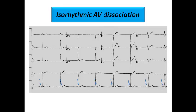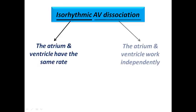On the fourth beat the P-wave is before the complex but nearly fused with it. Then in the next beat it appears slightly before the complex, and in the last two beats it is normally before the complex with a normal P-R interval. So what is going on here?